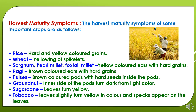The harvest maturity symptoms also vary from crop to crop. In case of rice, there will be hard and yellow colored grains. In wheat, there will be yellowing of the spiklets. In sorghum, pearl millet, and foxtail millet, yellow colored ears with hard grains. In case of ragi, brown colored ears with hard grains. In pulses, brown colored pods with hard seeds inside. In groundnuts, the inner layer of the pods turns dark from light color. In sugarcane, the leaves will turn yellow. In tobacco, leaves slightly turn yellow and specks appear on the leaves. These are the symptoms by which we can understand that the harvesting stage has come.